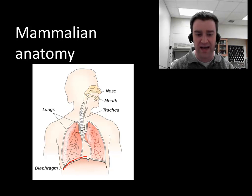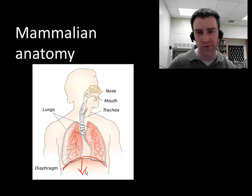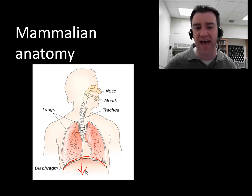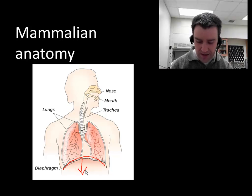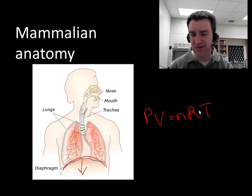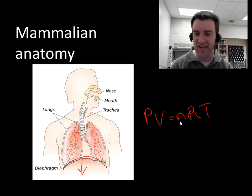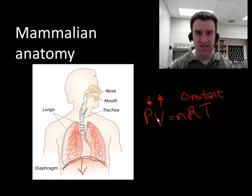We have a muscle called the diaphragm at the bottom of our chest cavity. When it contracts as we breathe in, it pulls down. We also have muscles in our ribs that contract to expand the chest cavity outward. Both have the net effect of making the space inside our chest bigger. If you remember your gas laws from chemistry — PV = NRT — the right side of the equation stays constant since the temperature of the gas and the amount of gas aren't changing.